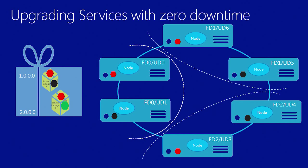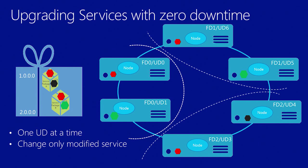Service Fabric application upgrade works one upgrade domain at a time, so the microservices that need to be upgraded are upgraded one at a time. Also note that I didn't change the red color — I only changed the microservice that was in black to green. You only have to update your modified service; you don't have to upgrade every service packaged in your application. Once an upgrade domain has been upgraded successfully, Service Fabric rolls that upgrade to the next upgrade domain and so on until your entire application is upgraded.